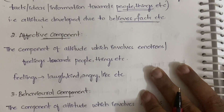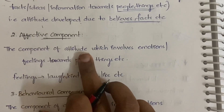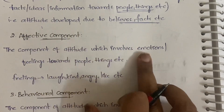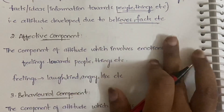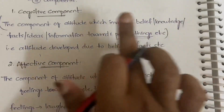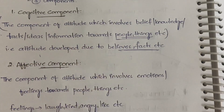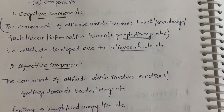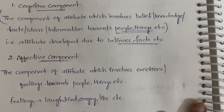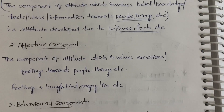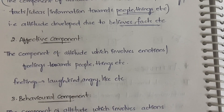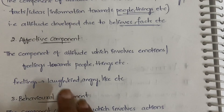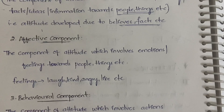The affective component is the component of attitude that involves emotions or feelings towards people, things, etc. Instead of beliefs or knowledge, here you are developing an attitude because of the emotions and feelings you have towards a person or thing. Feelings can be anger, sadness, happiness, love — different kinds of feelings. Based on a feeling or an emotion, you form an opinion.